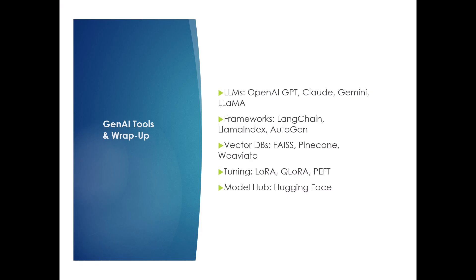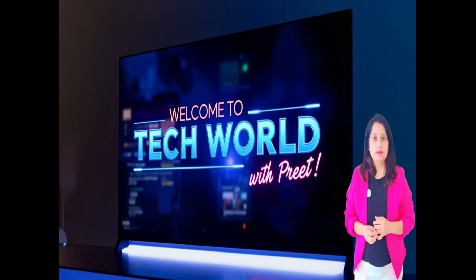The last question: what are the popular tools and libraries in the generative AI ecosystem? Large language models like OpenAI GPT, Claude, Gemini, and LLaMA can be used. Frameworks like LangChain, LlamaIndex, and Autogen are popular. For vector databases: ChromaDB, Pinecone, Weaviate, and FAISS. For fine-tuning, QLoRA and PEFT can be used. For model hub, Hugging Face is widely used.